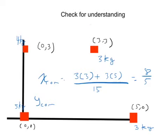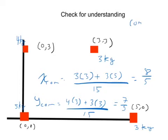So we have a four kilogram box at distance three away and a three kilogram box at distance three away, all over the total mass of the system, which is 15, and that gets us to seven thirds. So our center of mass is at the point eight fifths, comma seven thirds.